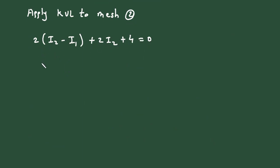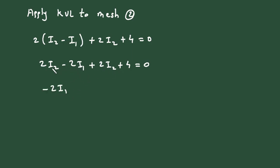Simplifying: 2I2 minus 2I1 plus 2I2 plus 4 equals 0. Writing I1 terms first: minus 2I1 plus 4I2 equals minus 4. This is equation number 2.